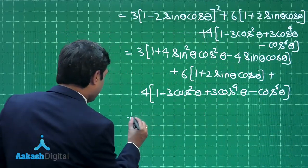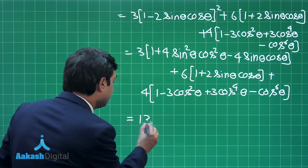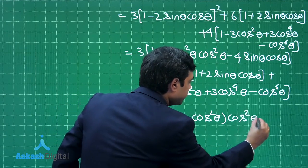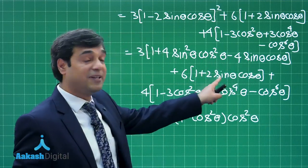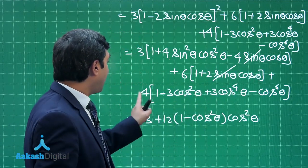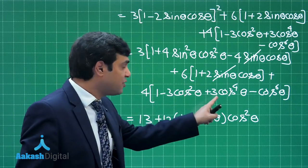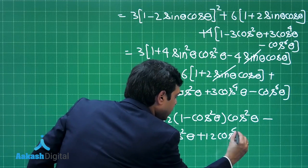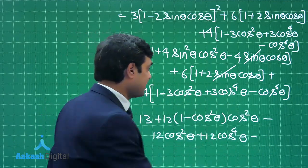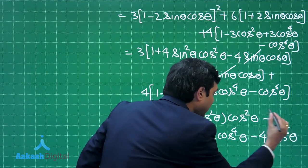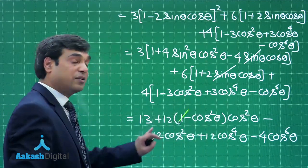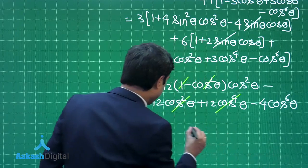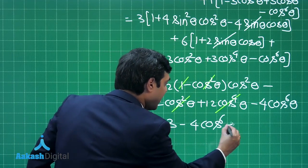After collecting constant terms 3 plus 3 plus 6 plus 6 plus 4, we get 13. Next, the 12(1 minus cos squared theta) cos squared theta term appears, along with 12 sin theta cos theta terms with opposite signs that cancel. The 12 cos squared theta terms cancel out, and the 12 cos 4 theta terms also cancel out, leaving us with 13 minus 4 cos 6 theta as expected.